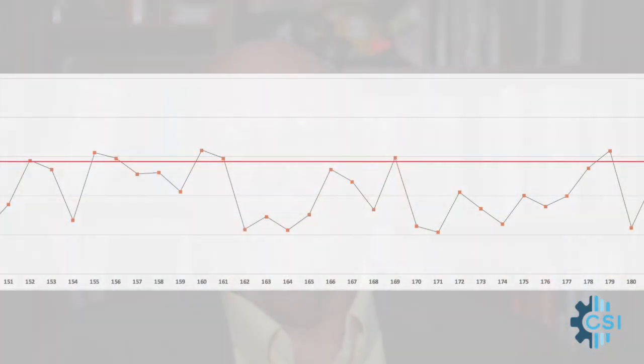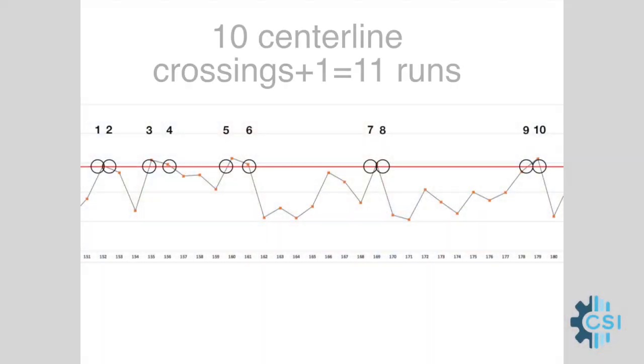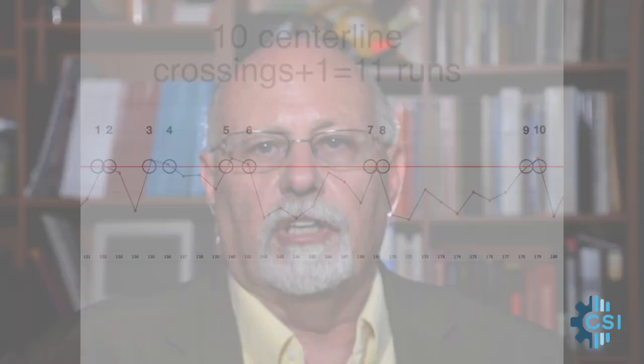Let's look at a different section of the run chart. Starting at data point 151 and going to data point 180, we have 30 data points. None of them fall on the center line, so 30 is the count we will use on the table. Now let's count how often the center line is crossed — it crosses the center line 10 times, and we will add 1 to the count, and that gives us 11 for the number of runs.